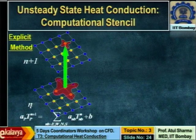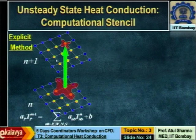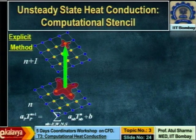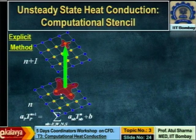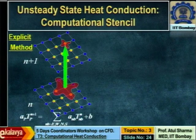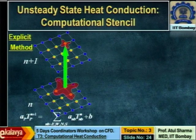After computing the temperature at 1 second from the initial condition (0 second), you use the 1-second values to compute 2 seconds, then 3 seconds, continuing up to 3600 seconds. You get pictures for each time instant, which can be assembled into a movie of the temperature variation. The same process applies to fluid flow simulations as well.